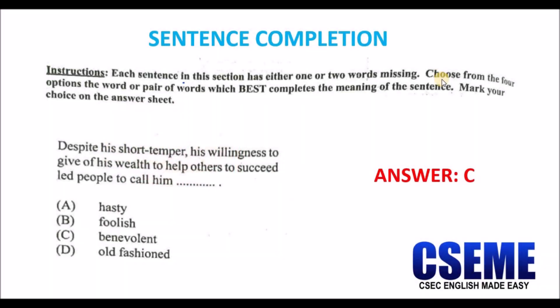Welcome back to CSEC English Made Easy. Today we are looking at sentence completion — simply put, sentence completion is when you complete the sentence. You're given a series of words and you have to select the word that best completes the sentence. On the CSEC exam paper you do not see the term 'sentence completion,' but the activity given is sentence completion. The instructions are: each sentence has either one or two words missing — choose from the four options the word or pair of words which best completes the meaning of the sentence and mark your choice on the answer sheet provided.